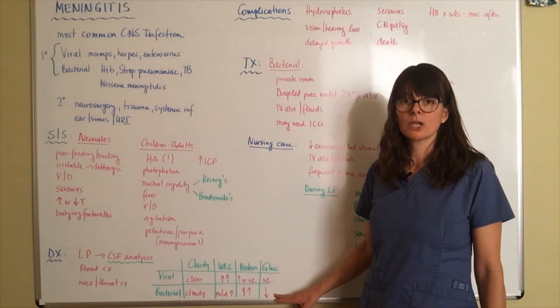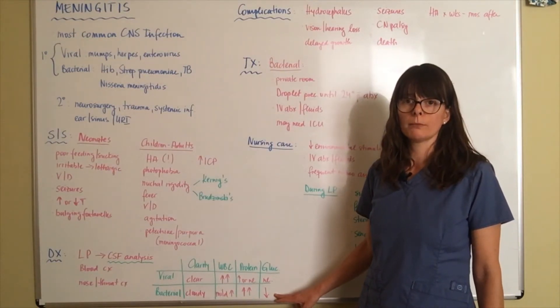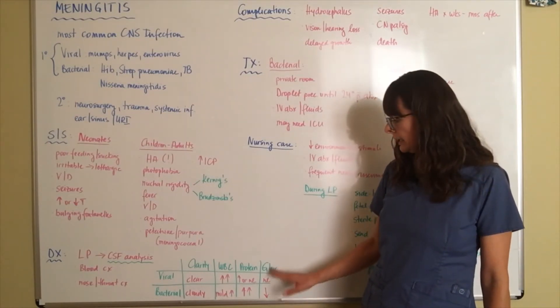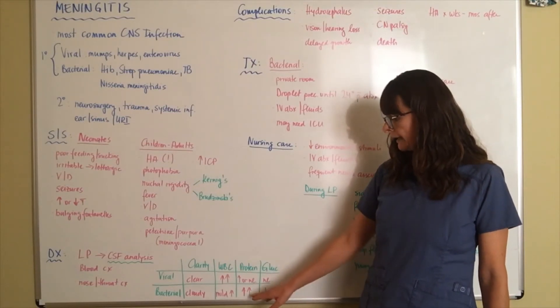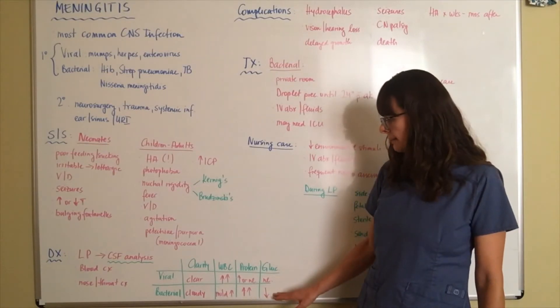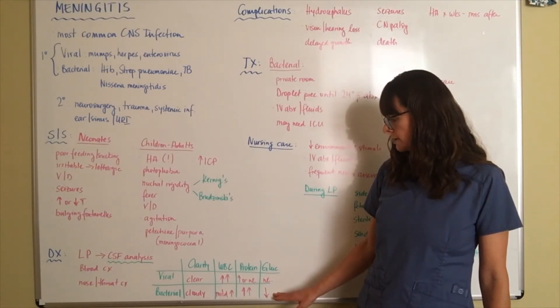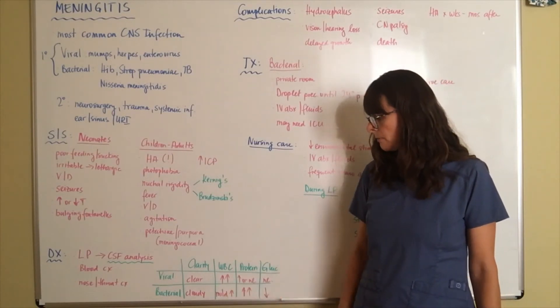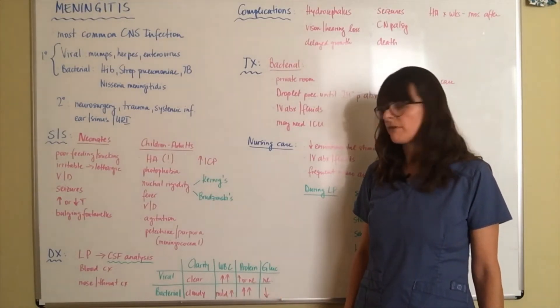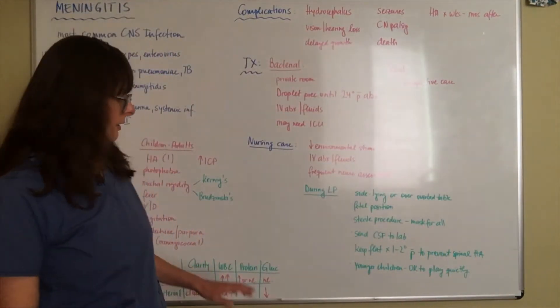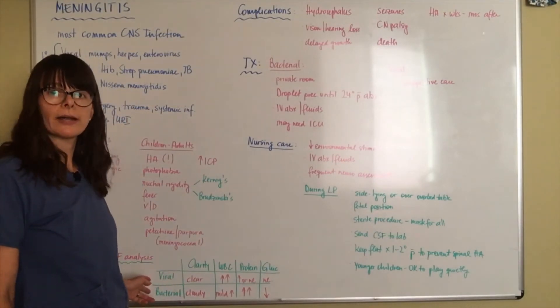The reason is bacteria as we know love a warm dark sugary environment, they love to replicate there. So they eat up all the glucose and in turn they produce proteins. That's why the glucose level in bacterial meningitis of the cerebrospinal fluid is decreased, the protein level is up, and there's a mild elevation in white count. These are usually things that could come up on an exam too, so I encourage you to memorize this small table down here.